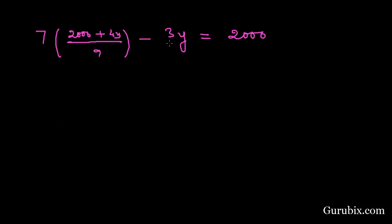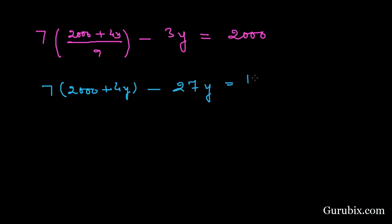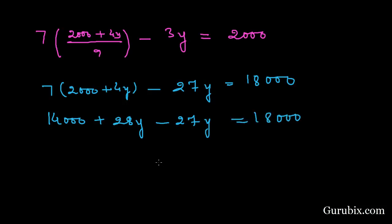Now we multiply both sides by 9. The 9 in the numerator and denominator cancel, giving us 7 times (2000 plus 4y) minus 27y equals 18000. Multiplying 7 into the bracket: 14000 plus 28y minus 27y equals 18000. Finally, y equals 18000 minus 14000, which means y equals 4000.